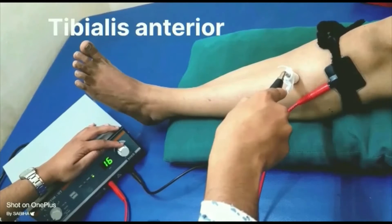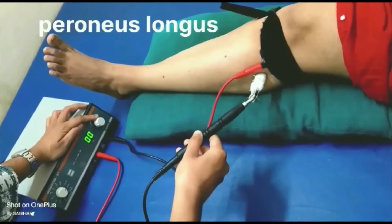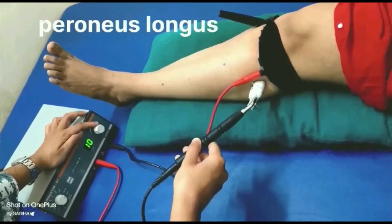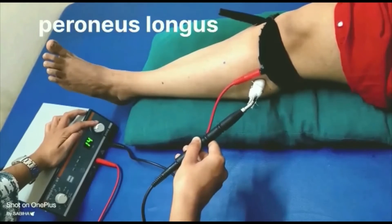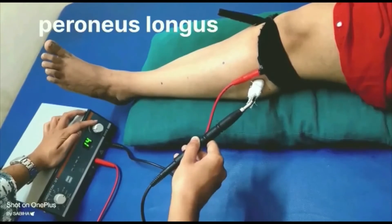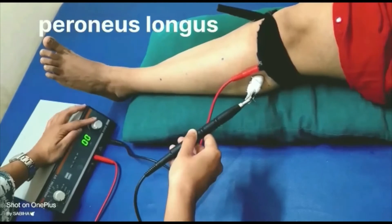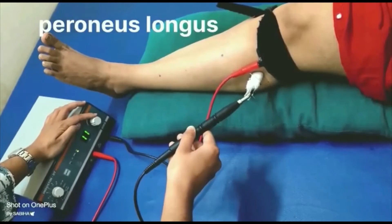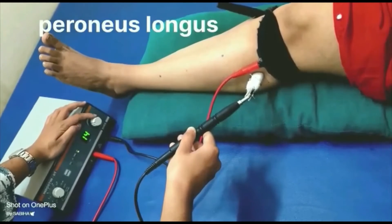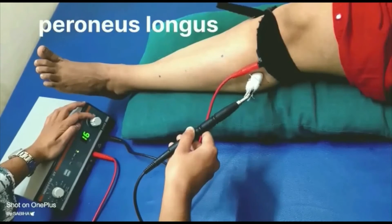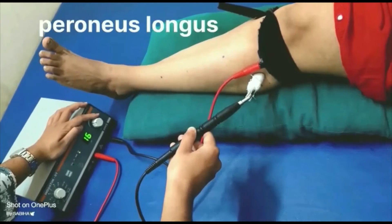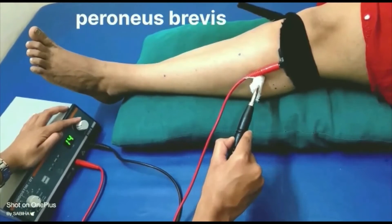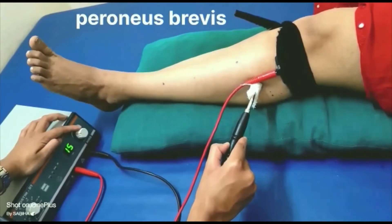Reduce the intensity to zero. Switch to SF mode with pulse duration of 0.3 milliseconds and increase the intensity gradually until minimal muscle contraction is visible, then reduce intensity to zero. For peroneus muscle: muscle response to IG is noted, followed by muscle response to SF.